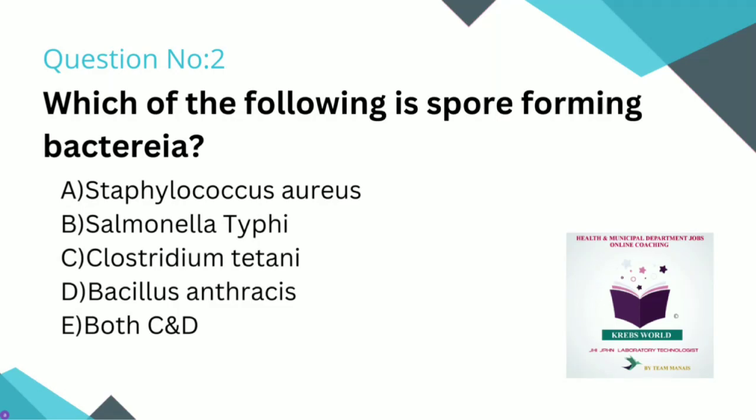Clostridium tetani produces a terminal spore that is bulging and round in shape, giving it a drumstick appearance.